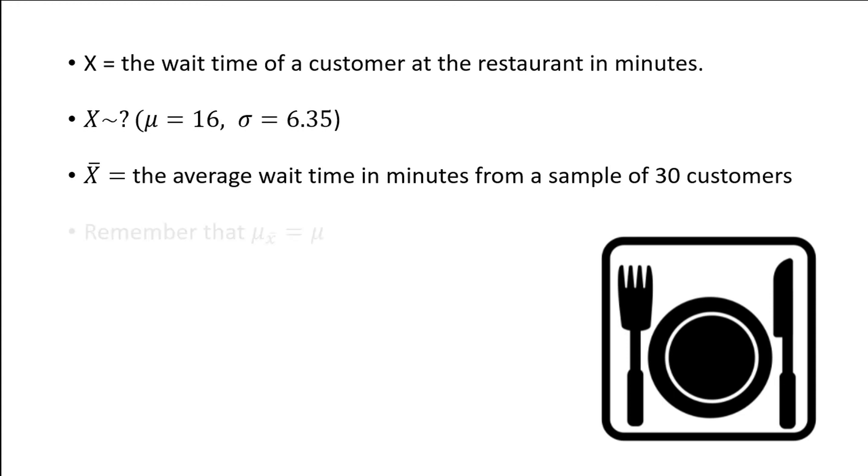then we remember that the mean of the sampling distribution is equal to the mean of the original distribution, and the standard deviation of the sampling distribution is the standard deviation of the original distribution, divided by the square root of the sample size.